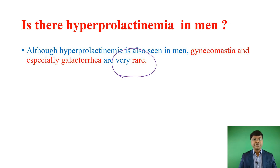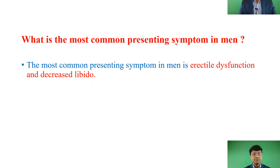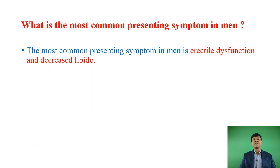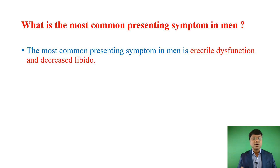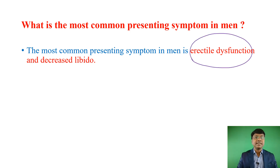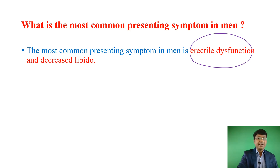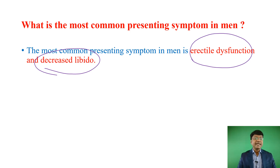What is the most common presenting symptom in men due to hyperprolactinemia? Because of hyperprolactinemia, the most common presenting symptom in men is the development of erectile dysfunction, and there will be decreased libido as well. So erectile dysfunction and decreased libido are the most common presenting symptoms in men.